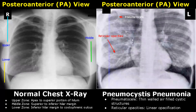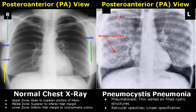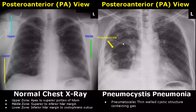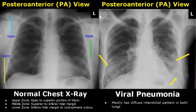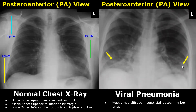Pneumocystis pneumonia is an atypical pneumonia that usually presents with pneumatoceles, which are thin-walled, air-filled cystic structures seen within lung parenchyma. Linear opacities called reticular opacities can also be found. Here is an image of Pneumocystis pneumonia with large pneumatoceles in the right middle and lower zones. Viral pneumonia usually involves both lungs and has a diffuse interstitial pattern consisting of reticulonodular opacities. COVID-19 pneumonia usually has this type of appearance on a chest x-ray.